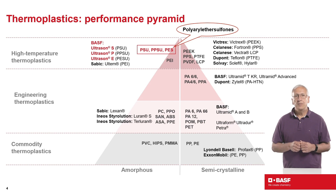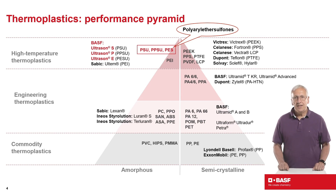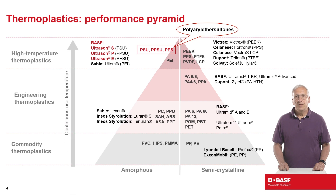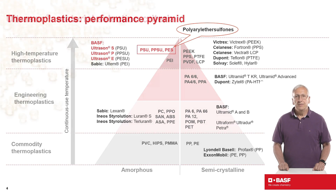This is where you will find polyaryl ether sulfones from BASF. More specifically, these include Ultrason S, or polysulfone, Ultrason P, or polyphenylsulfone, and Ultrason E, or polyethersulfone. The vertical line to the left of the pyramid represents maximum continuous use temperature. Please note that the highest continuous use temperature materials are at the top of the pyramid.